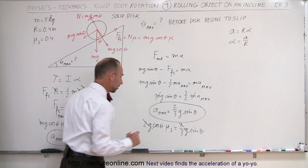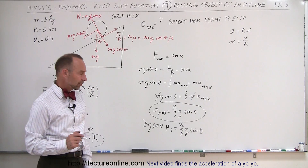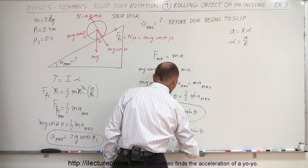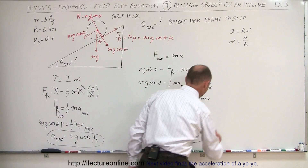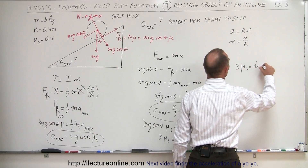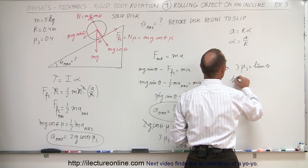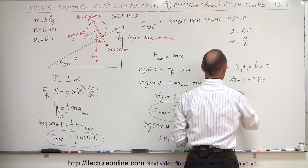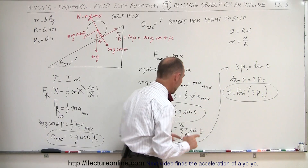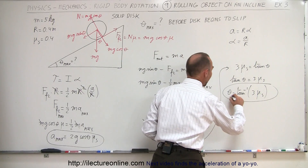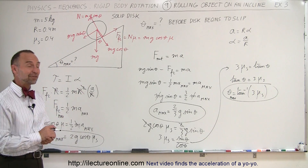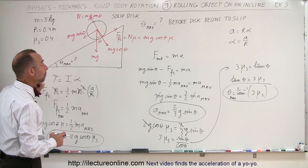The factor of two and g cancel on both sides. Dividing both sides by cosine theta and moving the three to the other side gives us three times mu_s equals sine theta divided by cosine theta, which is the tangent of theta. So three times mu_s equals tangent of theta, or theta equals the arctangent of three times the static coefficient of friction. This is the maximum angle, and notably it depends only on the coefficient of static friction.